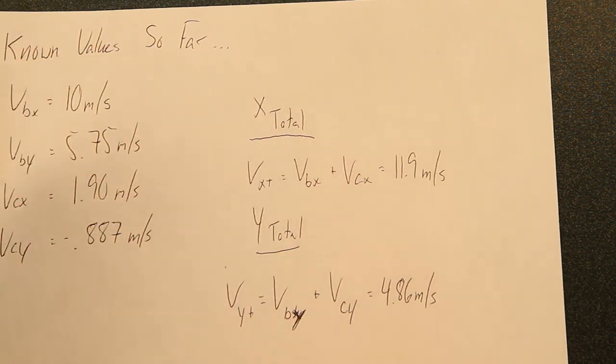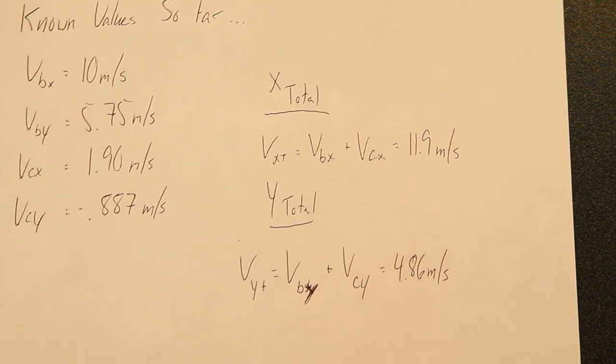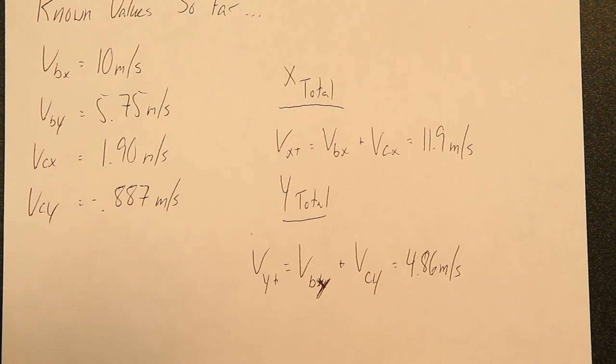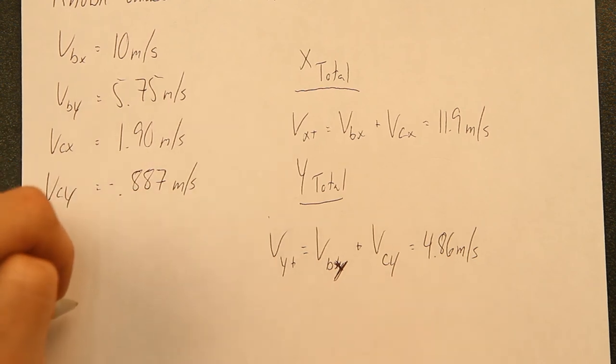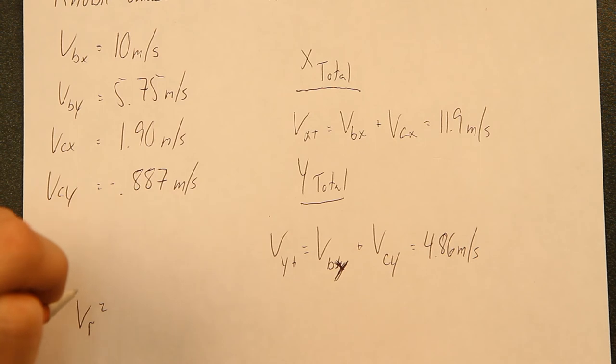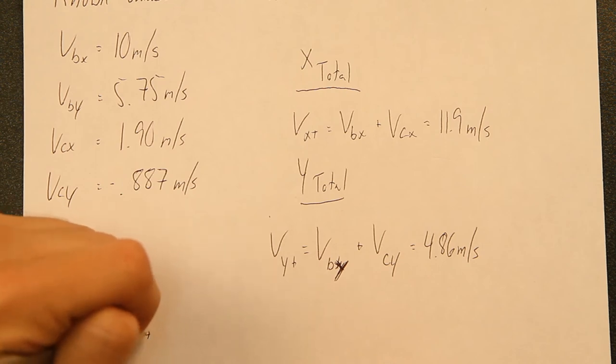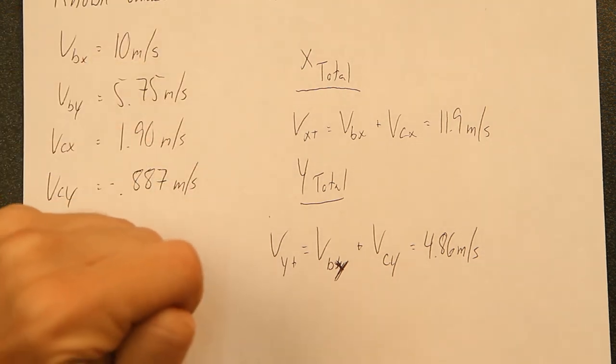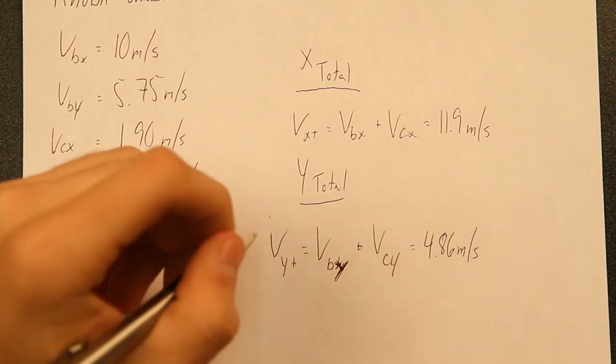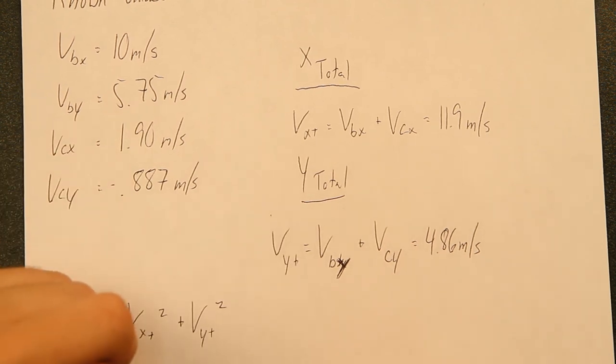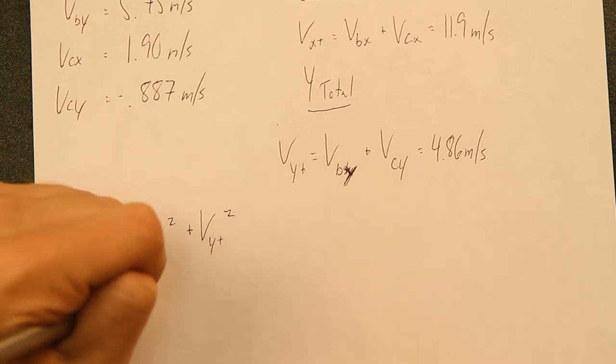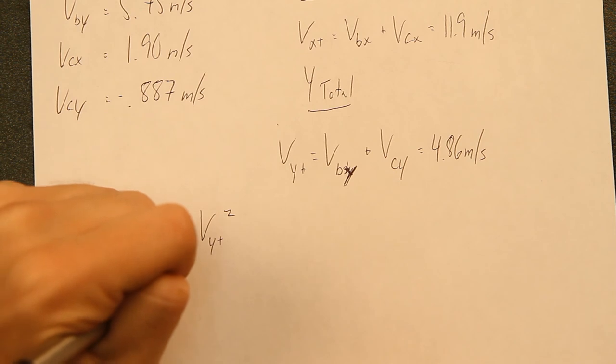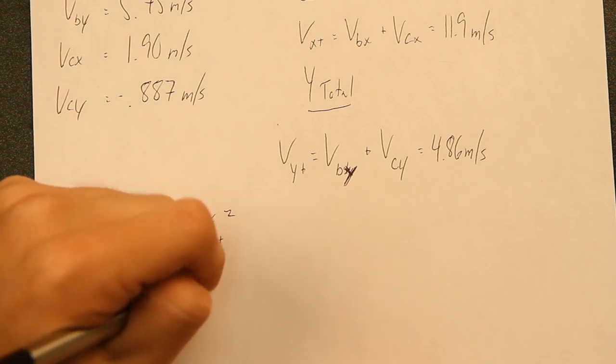The last thing we need to do here is find our resultant vector. That is using the Pythagorean theorem, which will be vr squared equal to vxt squared, that's the total that we had up here, plus the y total, which is this value.